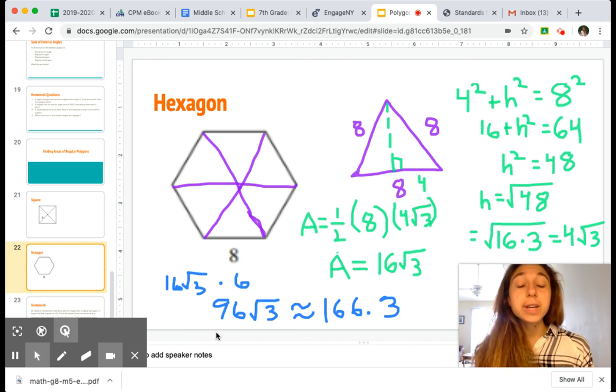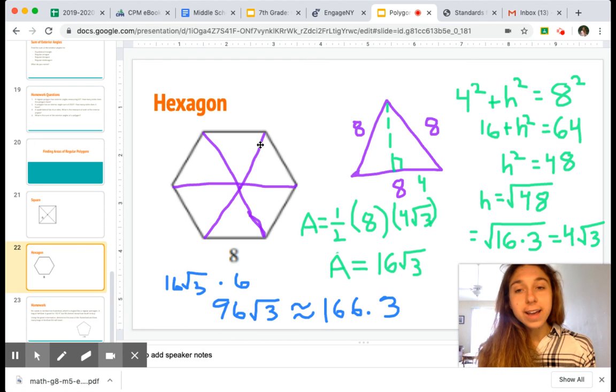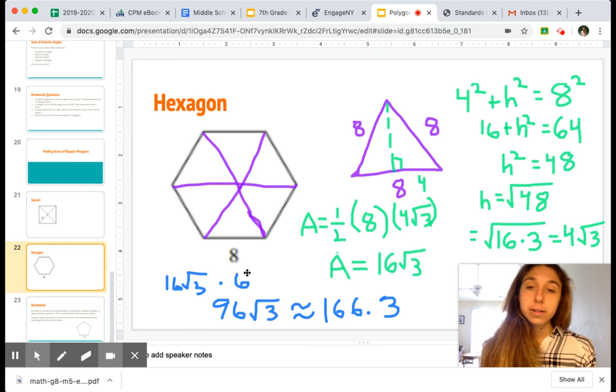So just to recap the process we went through, we divided our regular polygon into shapes that we knew how to find the area of. And we also had to find our height, find the area of the triangle, find the area of the number of shapes altogether.